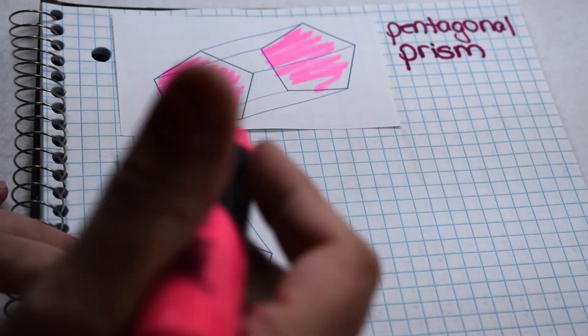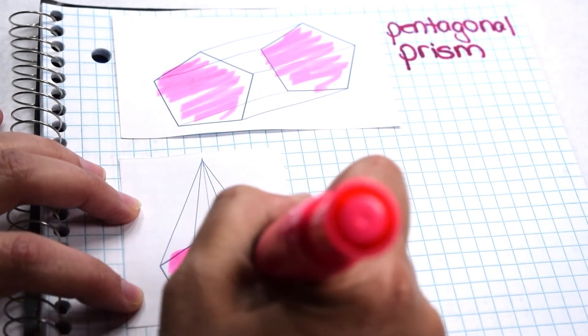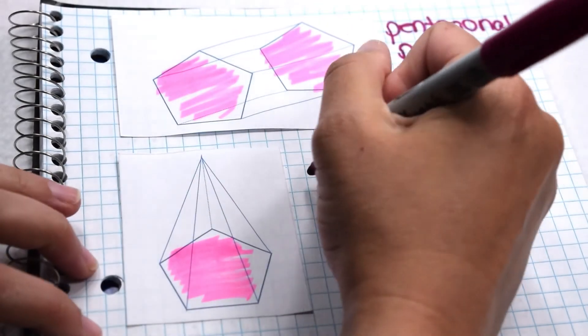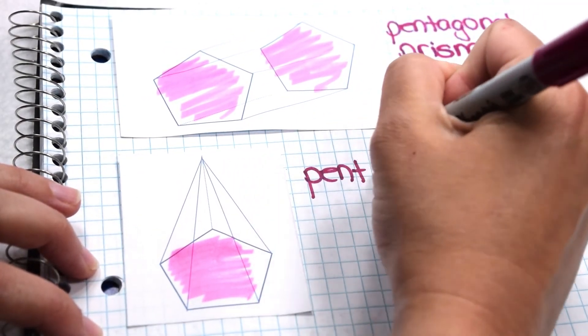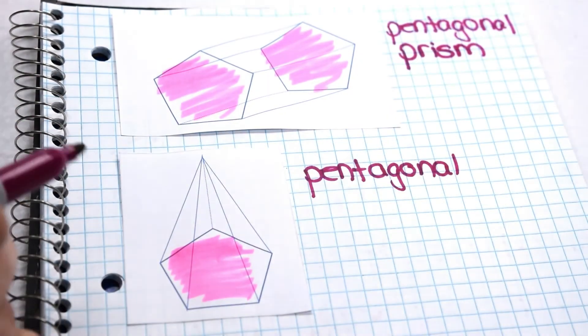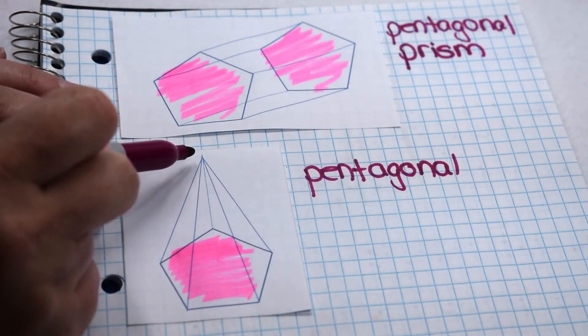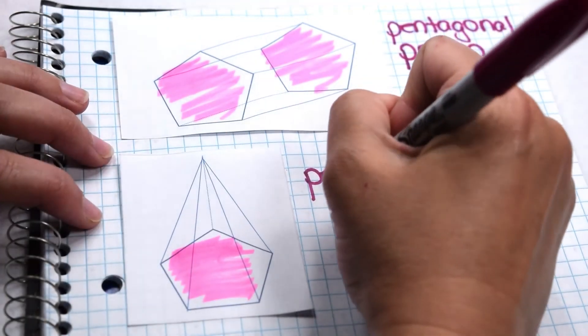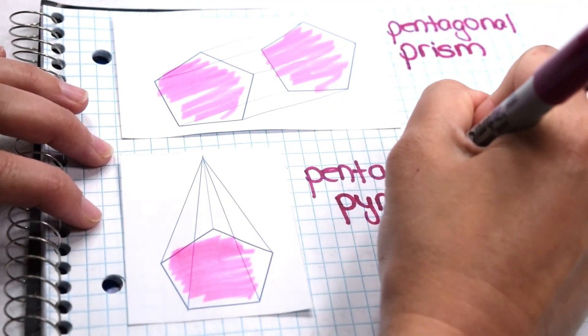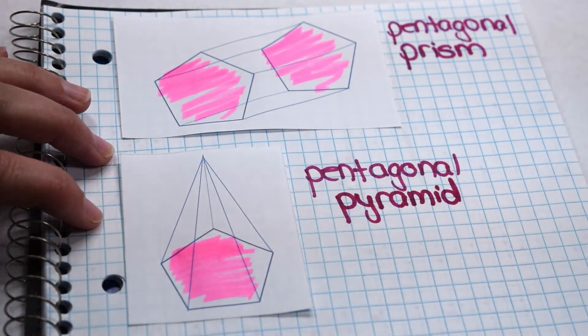On this one, we again have only one pentagon, so that tells us that our base is going to be a pentagonal something. When we look to see what's connected to our pentagon, we can see that it's connected by triangular lateral faces that meet at a common vertex called our apex. So that tells us this is a pyramid. So when we put it together, this figure is going to be a pentagonal pyramid.